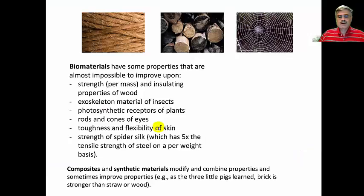But first, I want to point out that biomaterials have some properties that are very difficult to replicate. For example, it's hard to improve upon the strength per mass and the insulating properties of wood. And so we continue to use wood as a building material. The exoskeleton material of insects is hard to replicate.